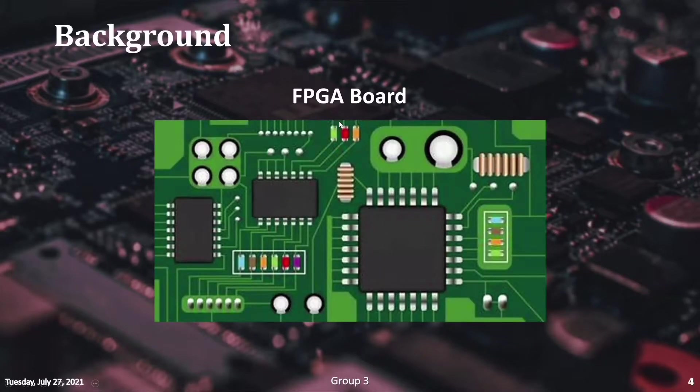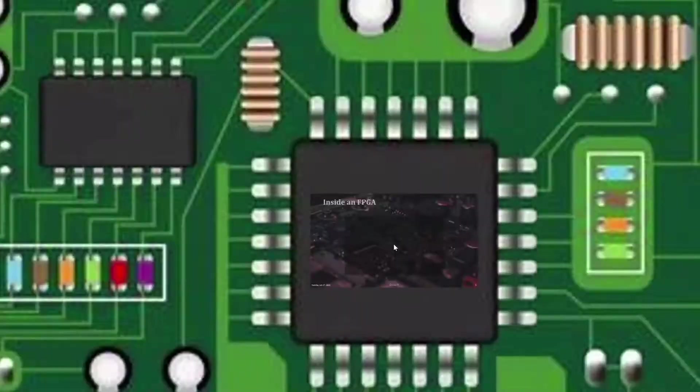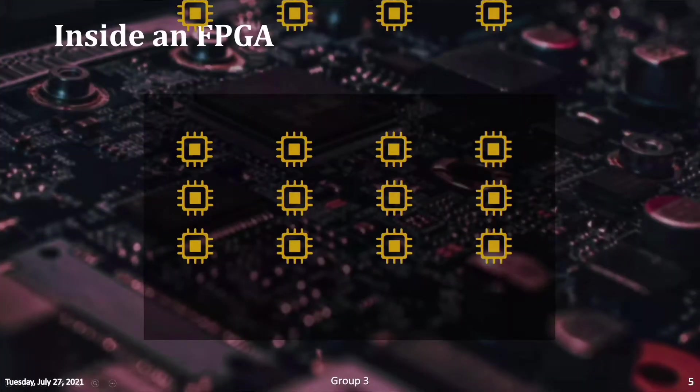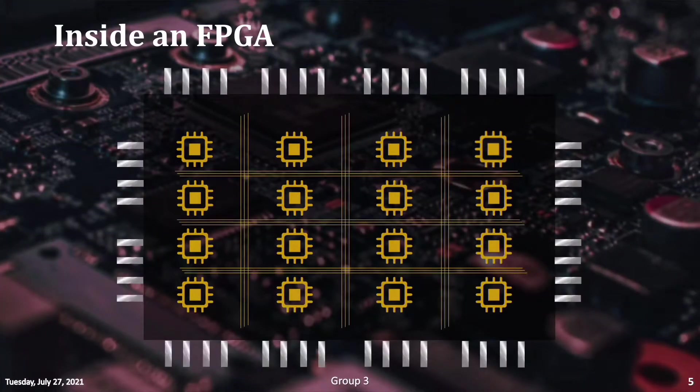Field programmable gate arrays or FPGAs are versatile devices that can implement any logic functions in parallel. An FPGA chip consists of thousands of unit cells known as the configurable logic blocks or CLBs.